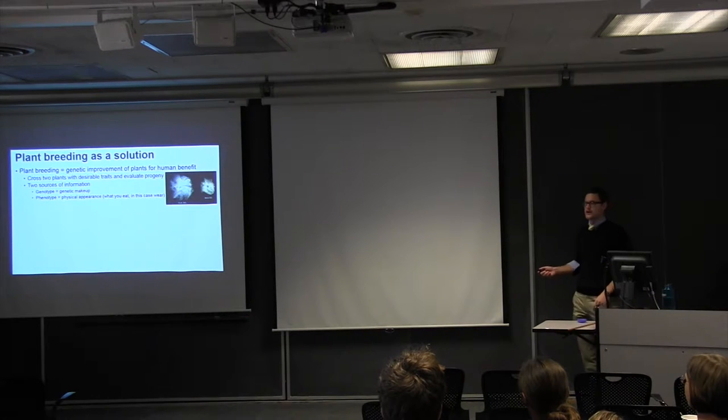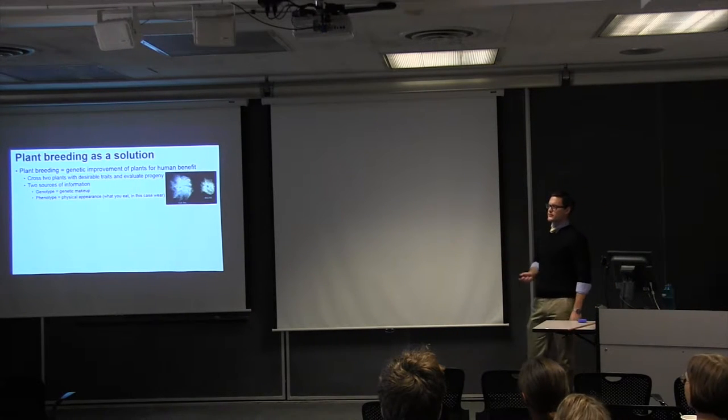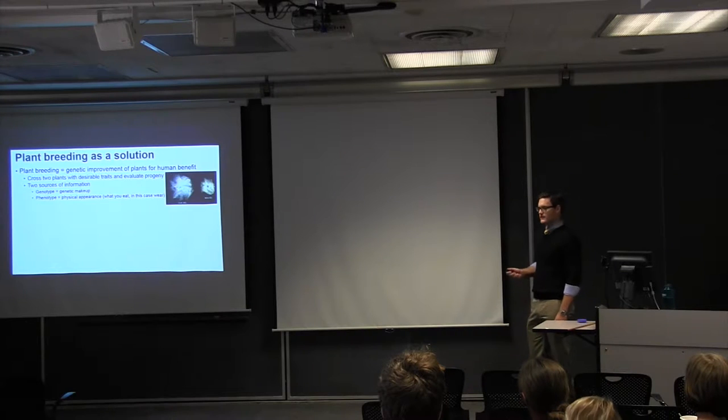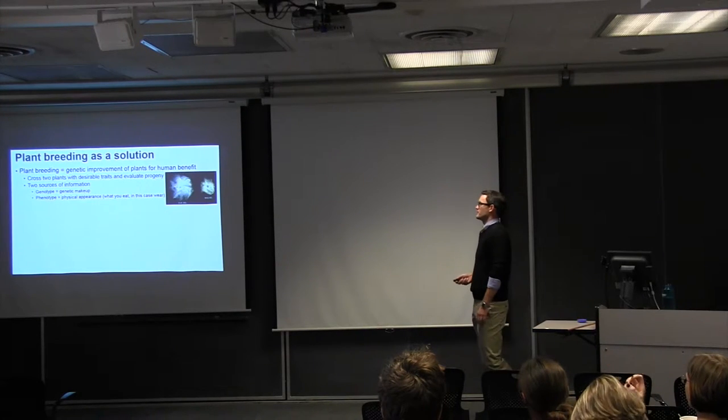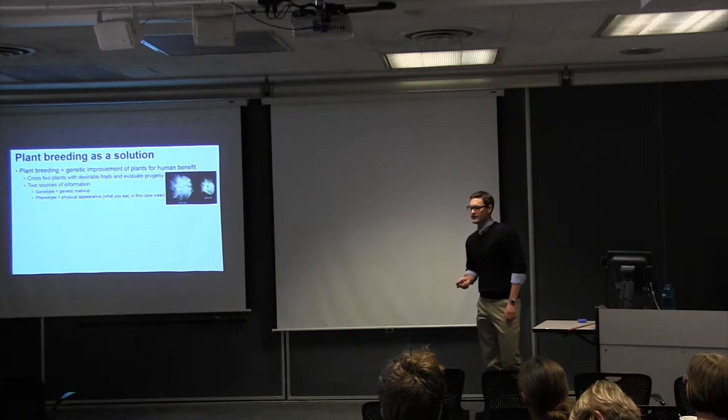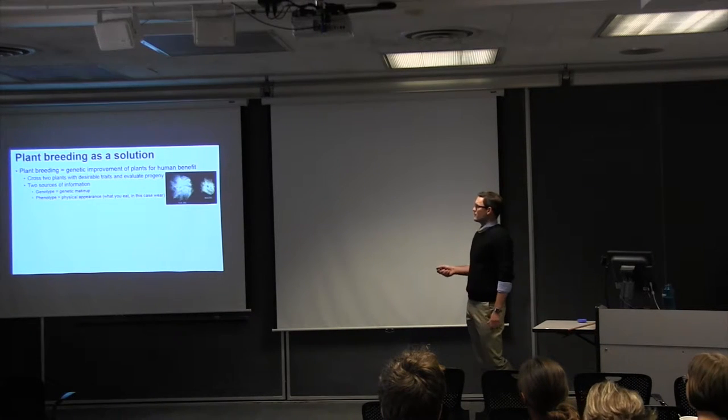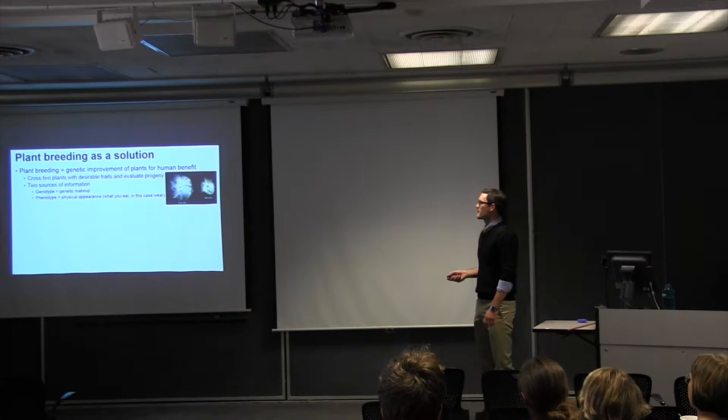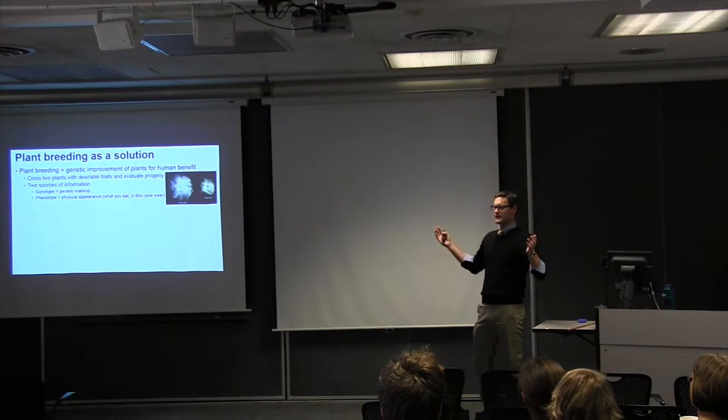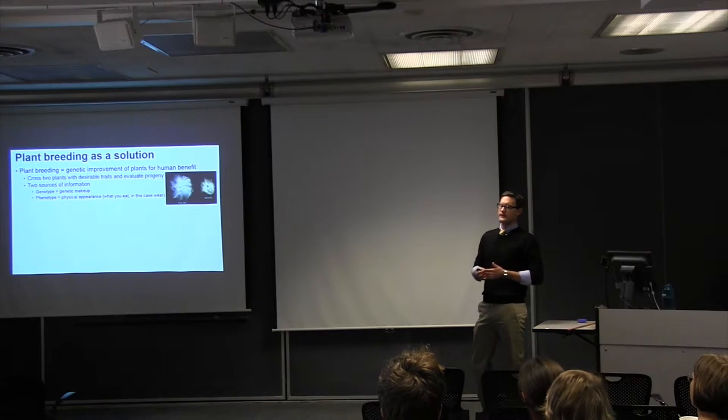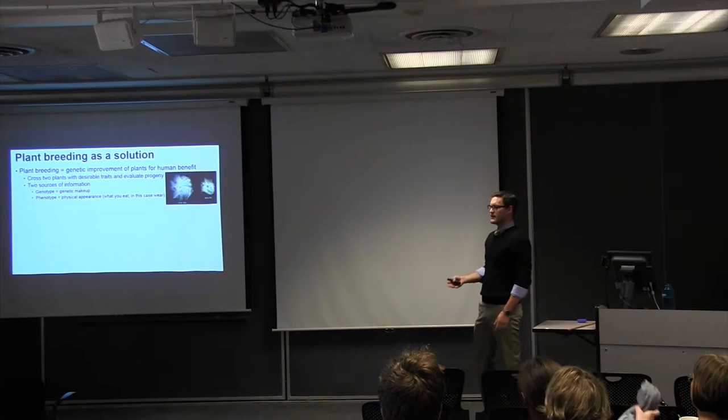So the challenge becomes developing heat and drought stress tolerant varieties so that we can maintain sustainable production while hopefully maximizing our use of the available water that we do have, as well as other natural resources. So plant breeding really offers the best solution. Despite what major seed companies might have you believe, there is no drought gene. So a genetically modified approach typically is not going to work. And so plant breeding is the genetic improvement of plants for human benefit.